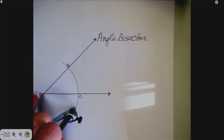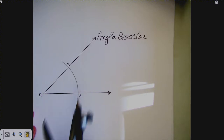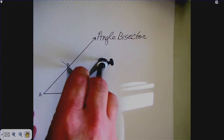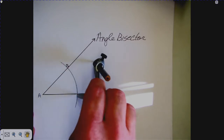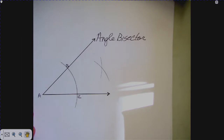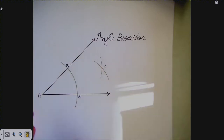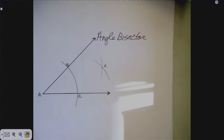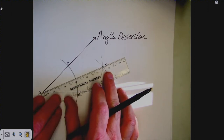Keeping the same compass setting, I place the point at B and draw an arc in the interior of the angle, then at C with the same setting draw another arc. These two arcs intersect at a point I'll call X. I take my straightedge and draw a ray from A through X.